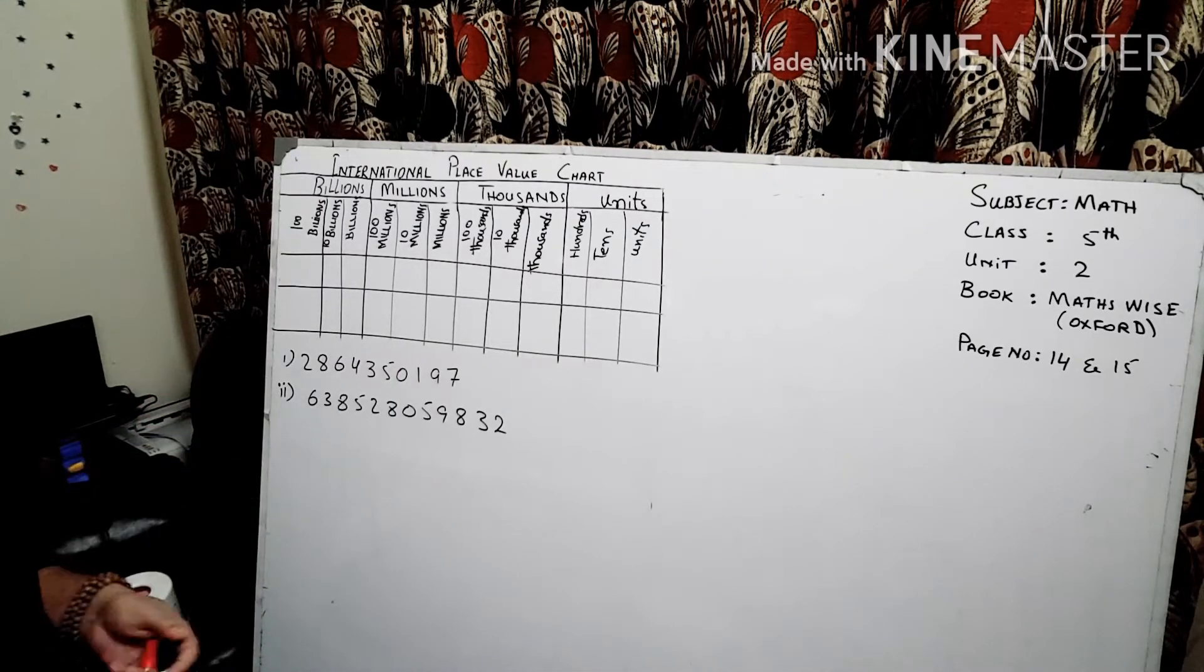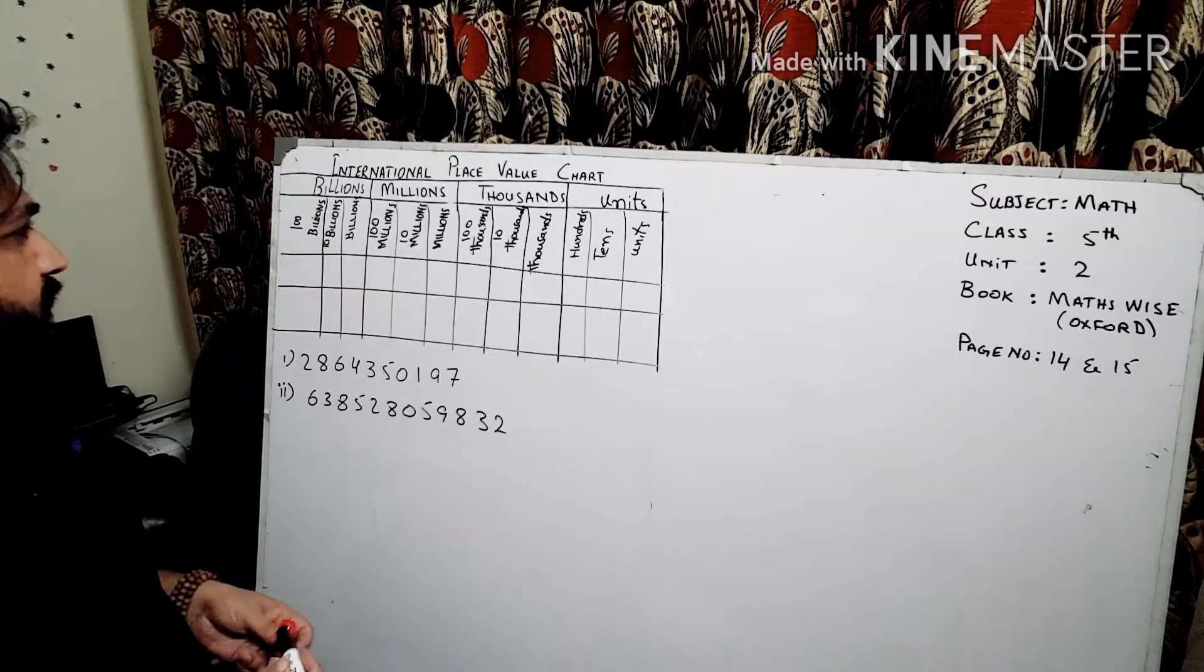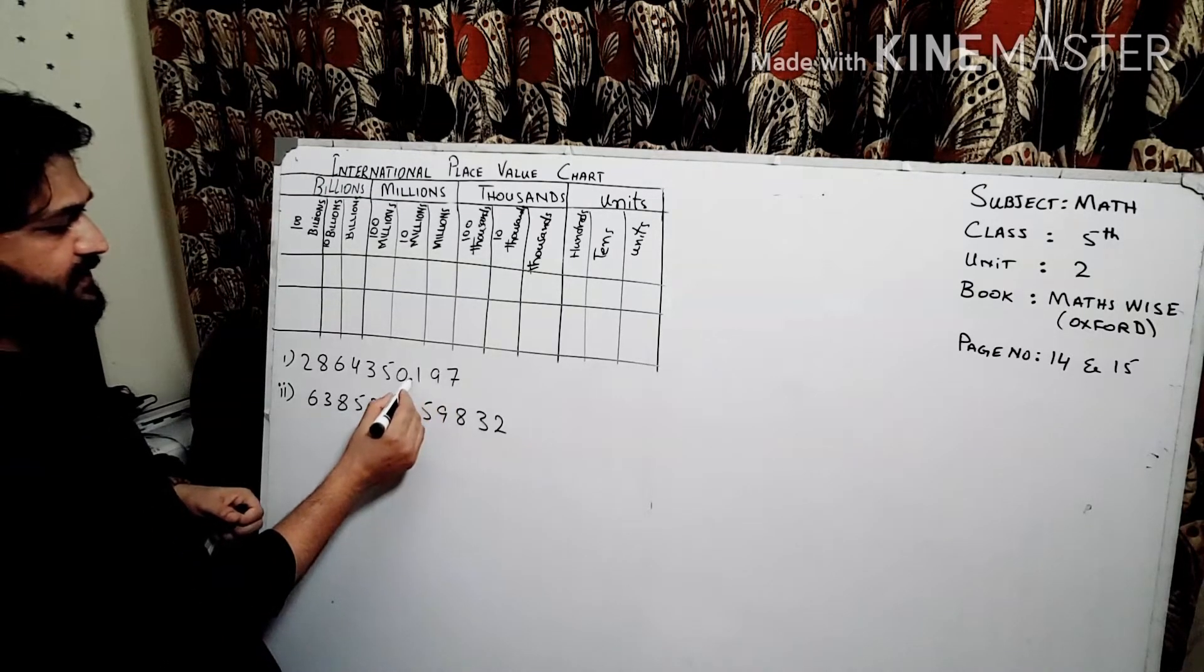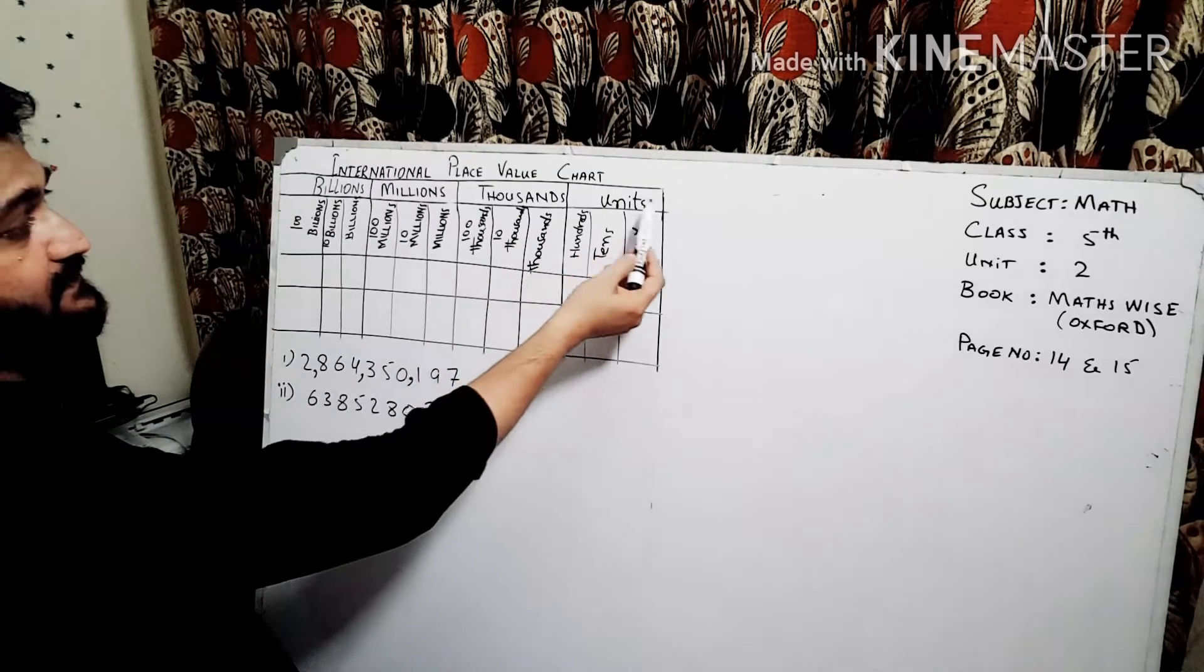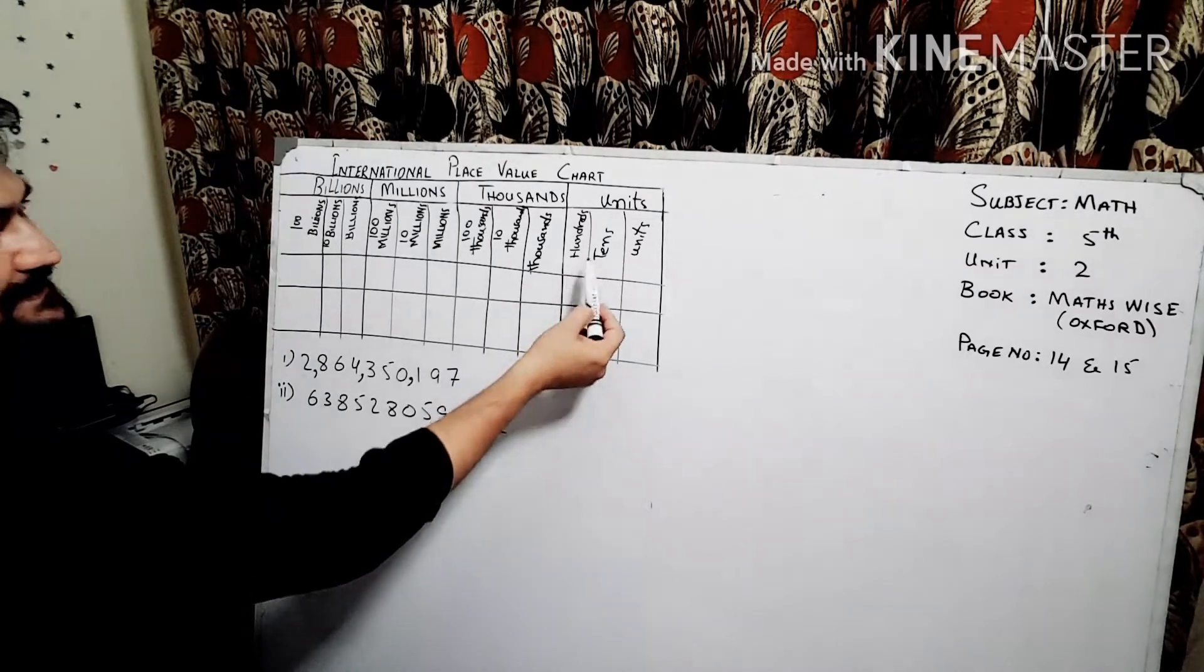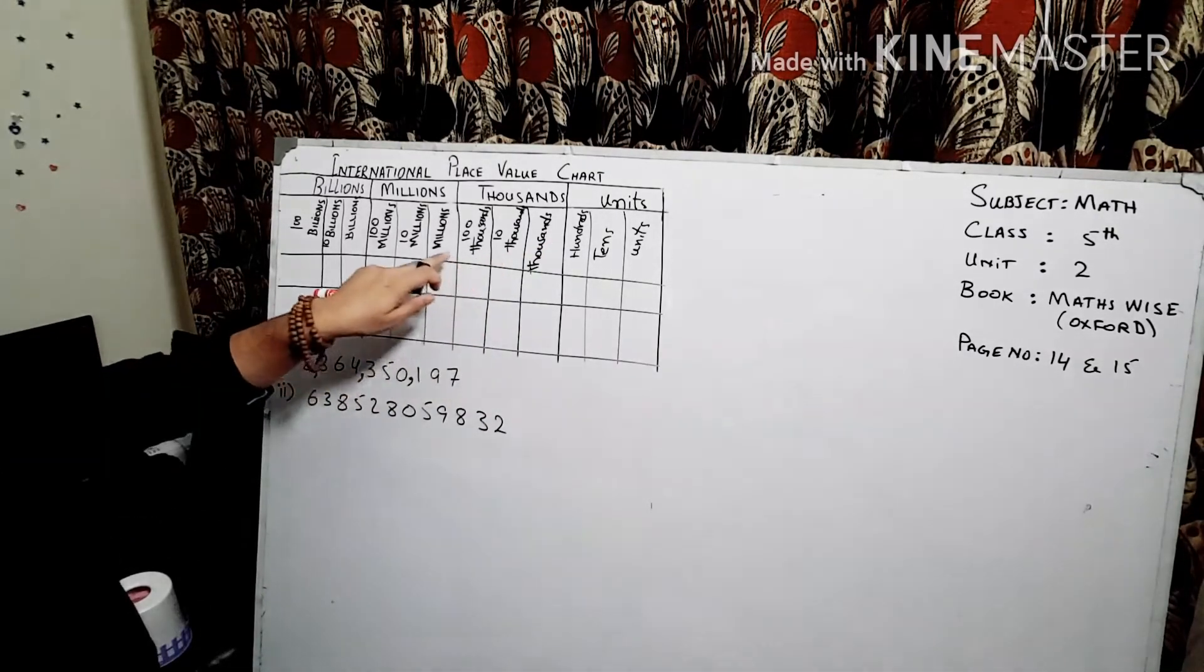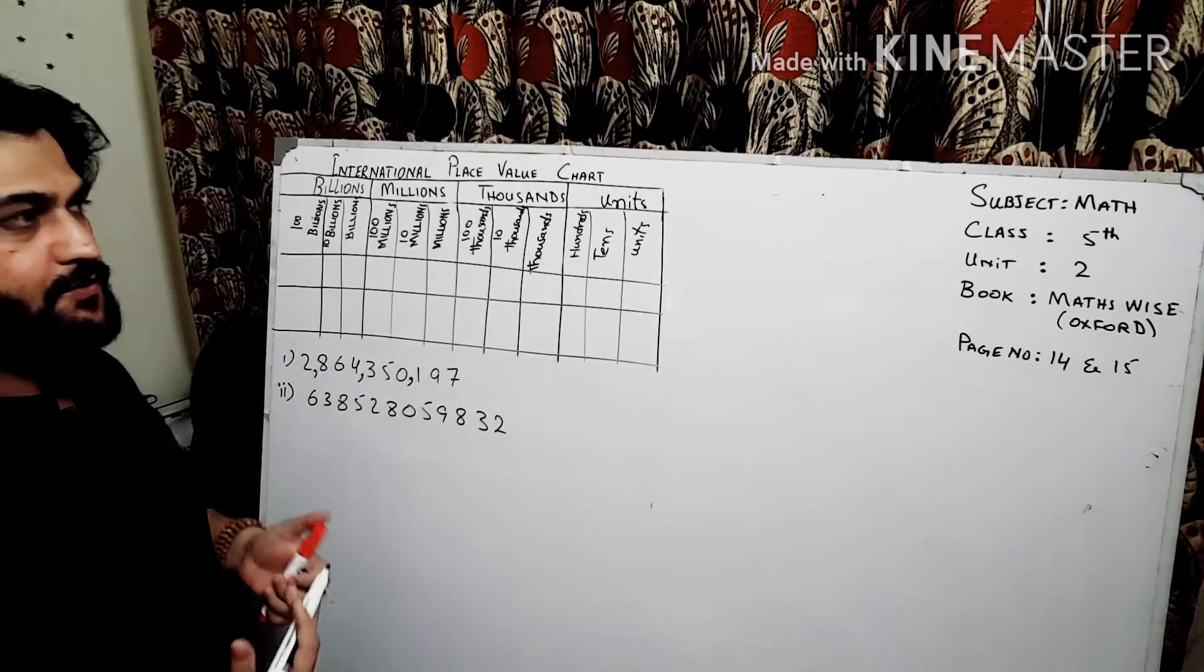In this case, as you are watching on the board, I have written these numbers. First of all, in international place value to separate them and read properly, we have to put commas. Every three digits we put a comma to separate them. As you can see, our units has three columns: units, tens, and hundreds. Then thousands has three columns also: thousands, ten thousands, and hundred thousands.